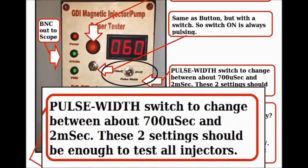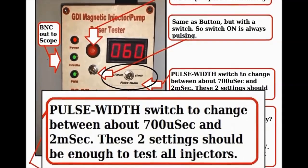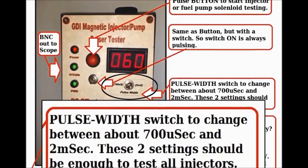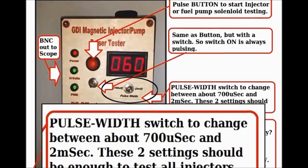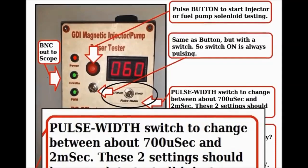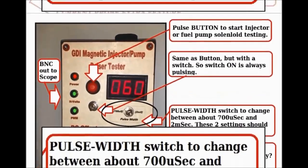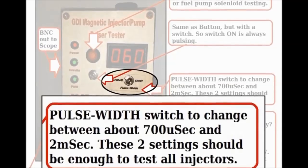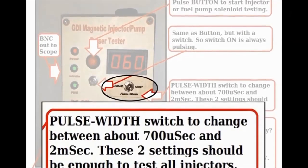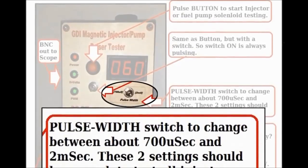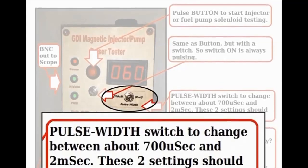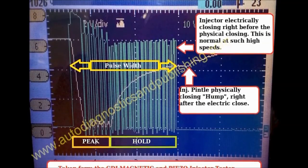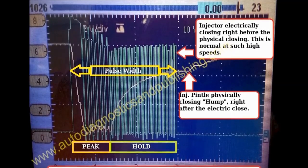Next is the pulse width switch, which offers 700 microseconds and 2 milliseconds. If you set it on the 2-millisecond setting, it will do a 2-millisecond pulse width — this is meant for long-term testing. If you want to do a leak down of the injector, 700 microseconds would be a more exact leak down test, meaning that the injector is going to open and close a lot faster. This is also a pulse width modulated control — that's the way GDI direct injectors are now controlled. This is the magnetic unit for magnetic GDI injectors, which operate at anywhere between 45 to 60 volts.